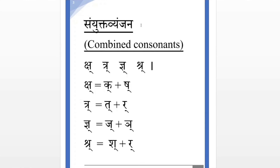When two consonants are combined, we get a new sound. There are only four Samyukta Venjan — combined consonants — that are attached within the alphabet. They are: CH, TR, GY, SH.